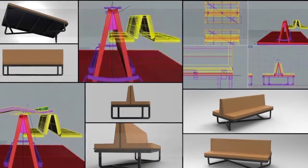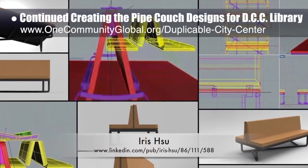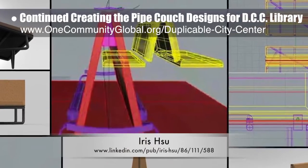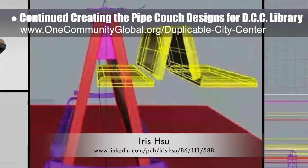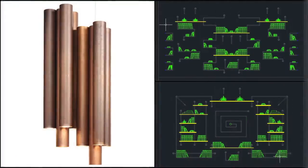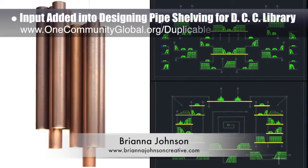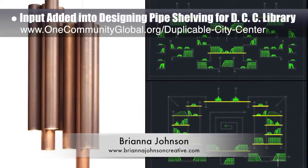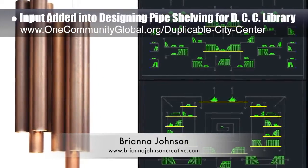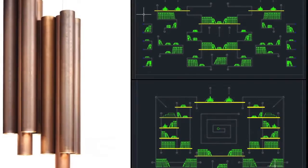Iris Su, industrial designer, continued with additional pipe couch designs for the duplicable city center library. These are her ninth generation drawings, focusing on ways to support the back and secure the cushions. Brianna Johnson, interior designer, also added her input to designing the pipe shelving for the duplicable city center library, with a new idea for lighting design and two layout proposals incorporating this idea into the pipe shelf designs.